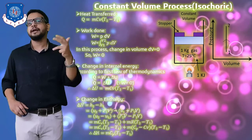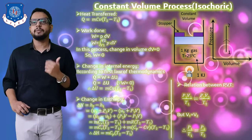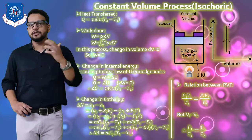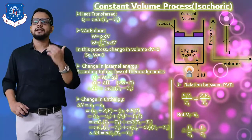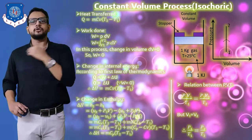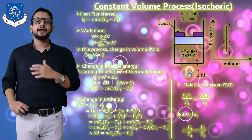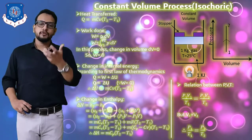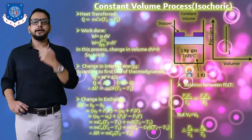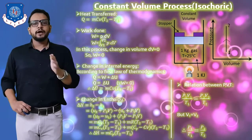Our last task is to determine the relationship among pressure, volume, and temperature. Using the combined gas equation P1V1/T1 = P2V2/T2, since volume is constant, V1 and V2 cancel from both sides, giving us the final relationship: P1/T1 = P2/T2.